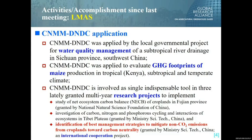This model is involved as an indispensable tool in three recently granted multi-year research projects. One project uses this model as the core tool to implement a study of ecosystem carbon balance of cropland in one province in southeast China. Another is used to investigate carbon, nitrogen, and phosphorus cycling and ecosystem interactions in the Tibetan Plateau. A third is used to identify best management strategies to mitigate non-CO2 emissions from cropland towards carbon neutrality.